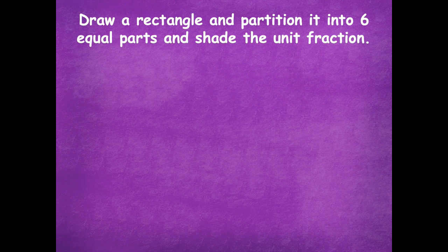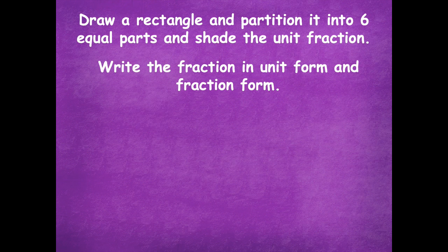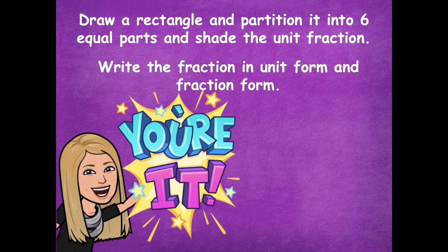You need your dry erase board for this part. You're going to draw a rectangle and partition it into six equal parts and shade the unit fraction. Remember, the unit fraction is one part. Draw your rectangle, partition it into six equal parts, shade the unit fraction, write it in unit form and fraction form, and then click play when you're ready to go over it together.